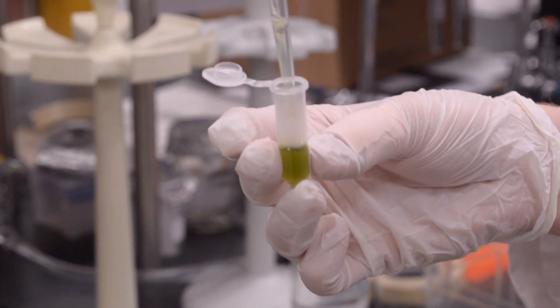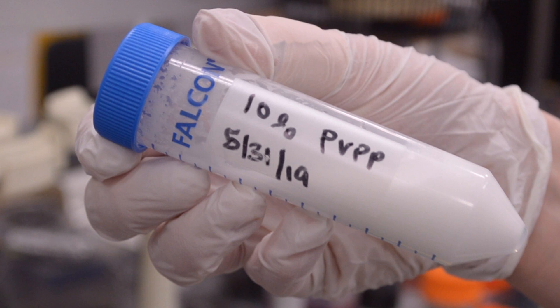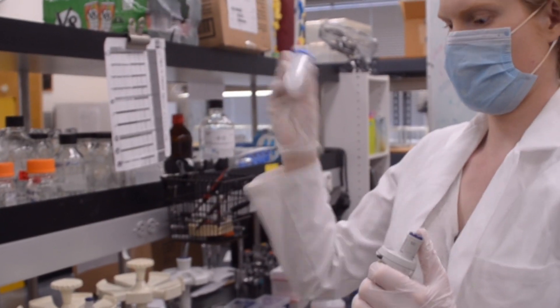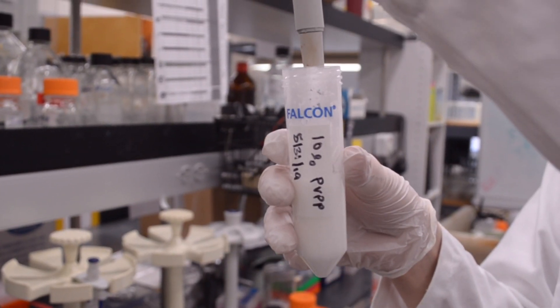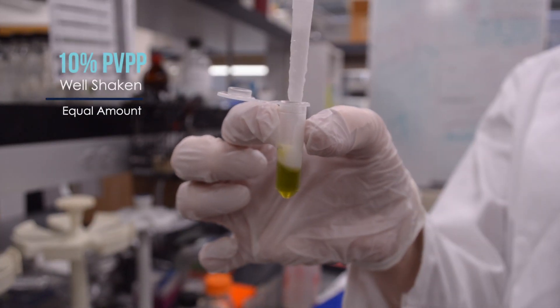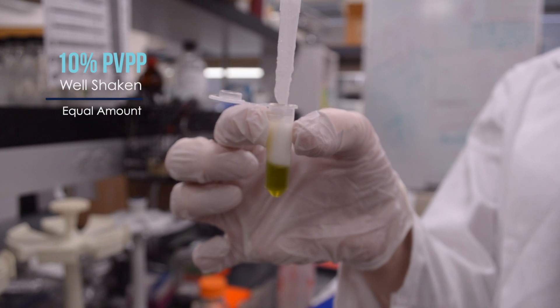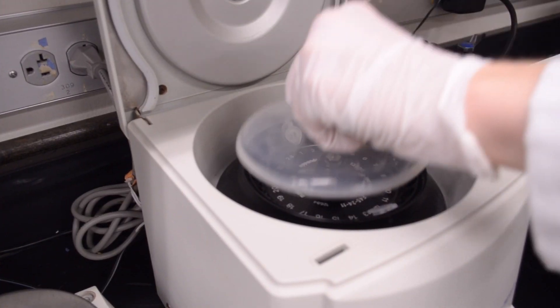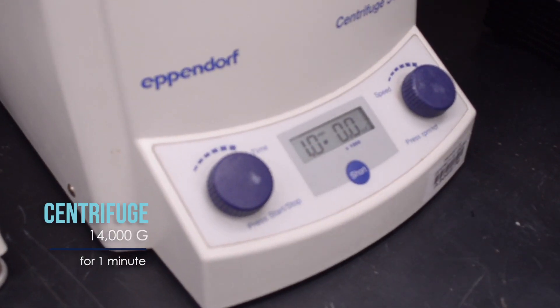Add the liquid to a new microcentrifuge tube, and then add an equal volume of well shaken 10% PVP. Now shake the tube and centrifuge at 14,000 g for one minute.